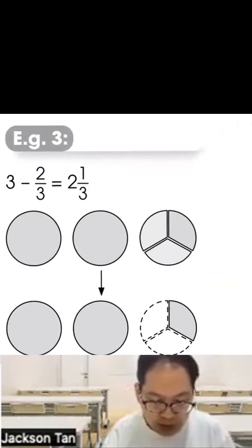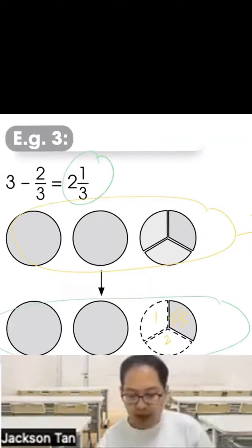Example 3: Three whole minus two and one third. Can you see that the answer is two and one third? Here is the picture: one, two, three. These are three wholes. You take away two and one, two, so you're left with one piece here. So it's one out of three. That's why the answer is two and one third. That's level three.